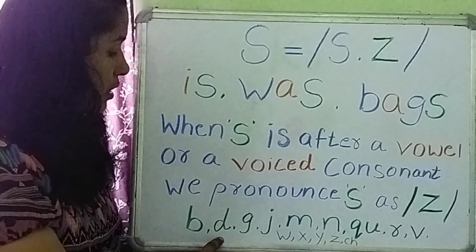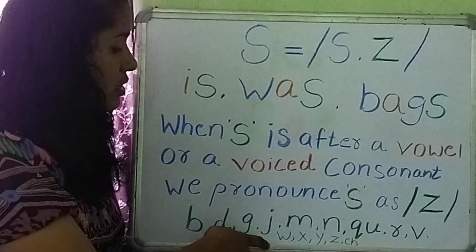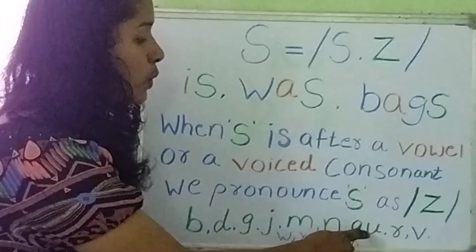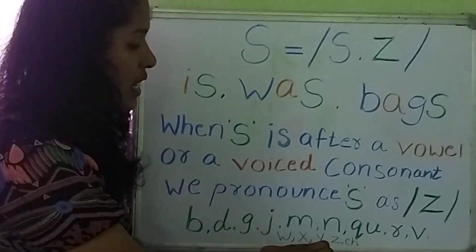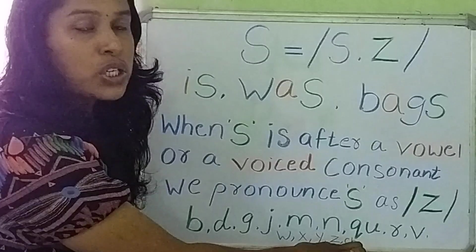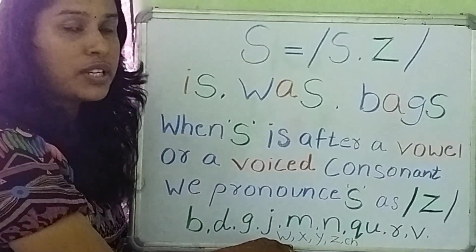Let's see here: B, D, G, J, M, N, Q, R, V, W, Y, Z, TH. These are the voiced consonants.